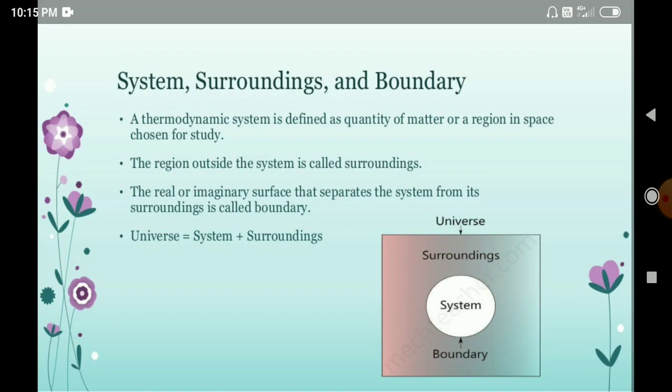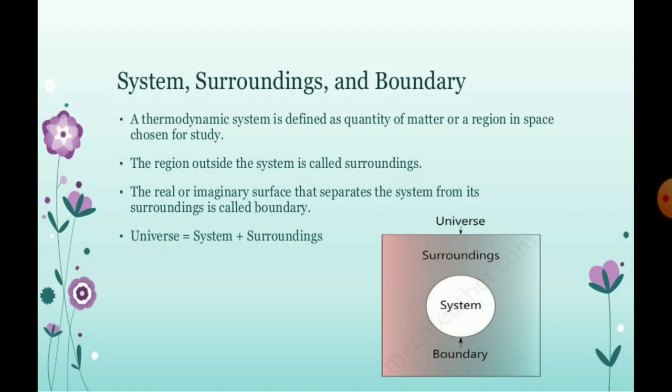System, surrounding, and boundary are the basic conditions in thermodynamics. A thermodynamic system is defined as the quantity of matter or the region in the space which is chosen for the study. The region outside the system is called surrounding.